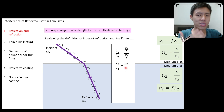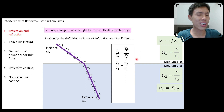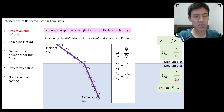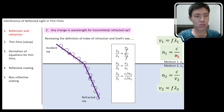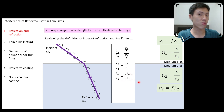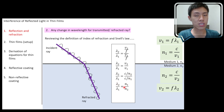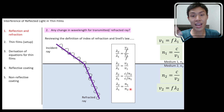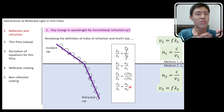Let's express this in terms of index of refraction, since we usually know a material's index of refraction. We replace v2 with c/n2 and v1 with c/n1. This gives us (c/n2) divided by (c/n1). Canceling c and rearranging, we get λ2/λ1 = n1/n2. This equation is more useful because n1 and n2 are usually known — for example, air is 1.00 and water is 1.33.